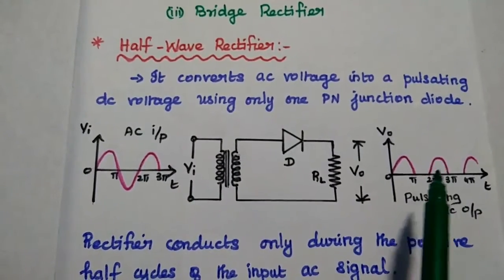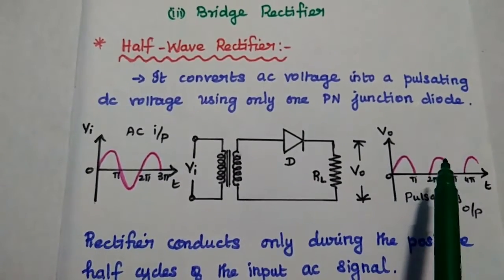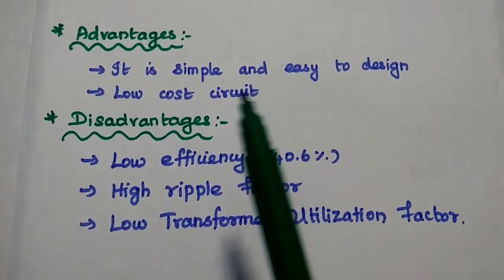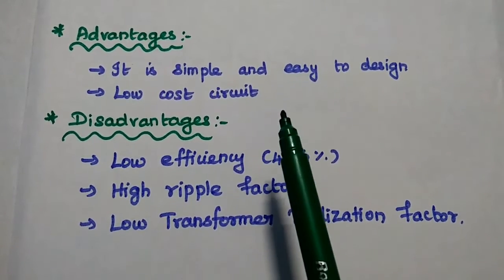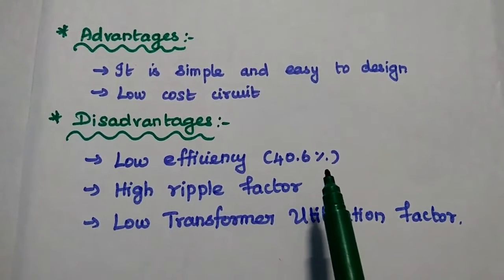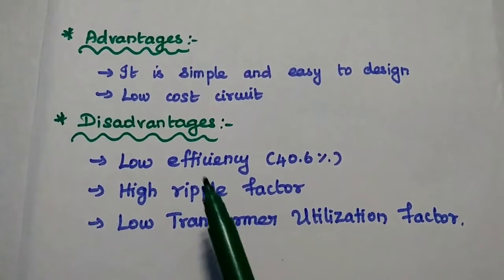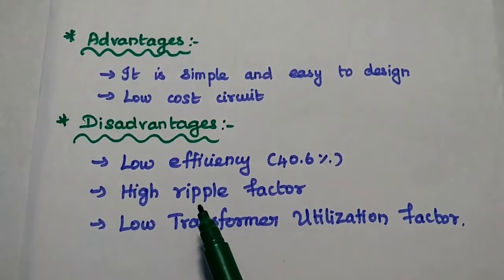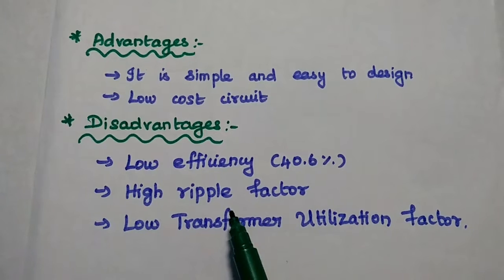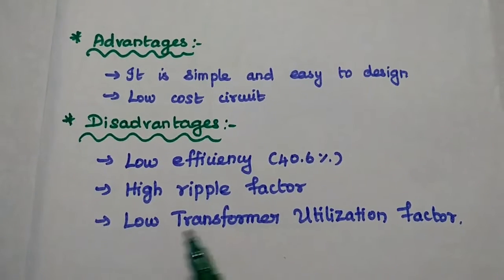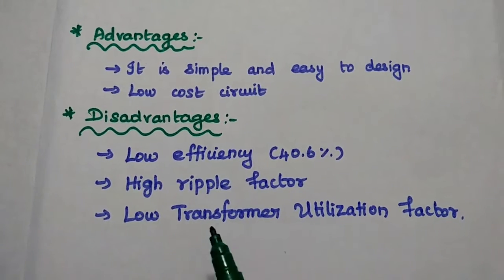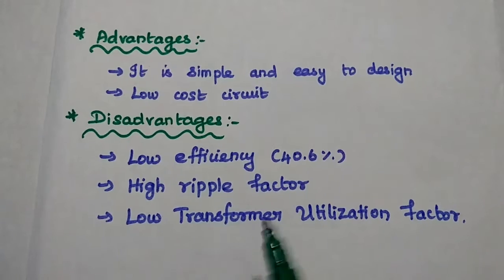Why do we call this DC? Because it is unidirectional with some AC content. The advantages of half wave rectifier: the circuit is very simple and easy to design, and it is a low cost circuit because it uses only one diode. Disadvantages: its efficiency is very low — the maximum efficiency is 40.6%. It has a very high ripple factor. Ripple means the unwanted AC component present in the DC output. It also has a low transformer utilization factor, meaning we cannot utilize the maximum efficiency of the transformer.